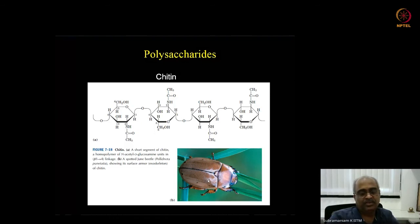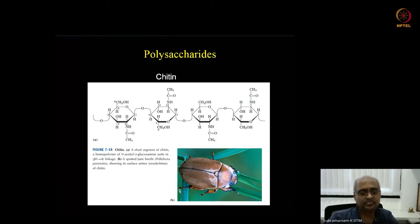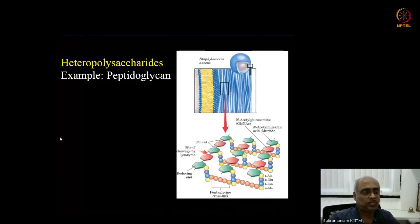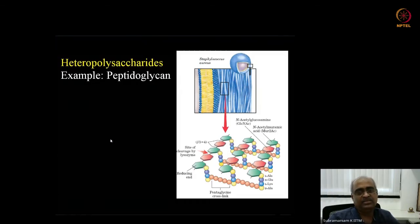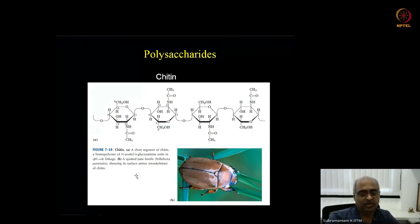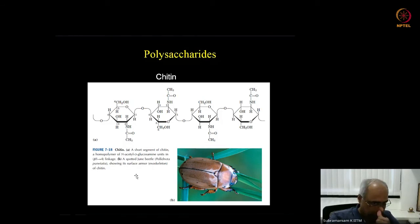Chitin is found not only in insects but also in crustaceans like shrimp and prawns, and chitin molecules are used as biomaterials in tissue engineering. Cellulose is also glucose in beta-1,4 linkage — the difference from starch is solely the beta configuration. In the next class we will cover heteropolysaccharides and more complex derivatized polysaccharides that are very important in the extracellular matrix.